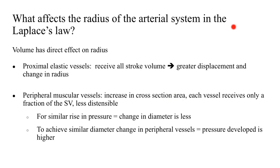What affects the radius of the arterial system in the Laplace's law equation? Volume has a direct effect on radius or diameter. In the case of proximal elastic vessels — the central vessels — they receive almost all of the stroke volume, and hence there is a greater displacement and a greater change in radius on account of these elastic fibers. When it comes to the peripheral muscular vessels, the number of muscular fibers is more than the elastic fibers, and as a result these vessels are less distensible. Additionally, as you go down the arterial tree, there is an increase in cross-sectional area and each vessel receives only a fraction of the stroke volume. So for a similar rise in pressure, the change in diameter or radius is less. In other words, in order to achieve a similar diameter change in the peripheral vessels, the pressure developed in these vessels is much higher than the pressure developed in the central elastic vessels.